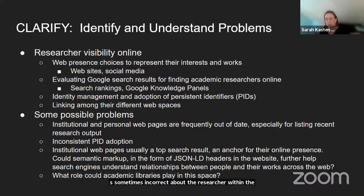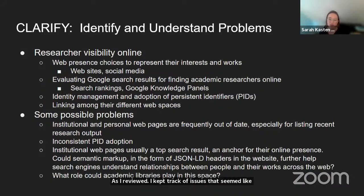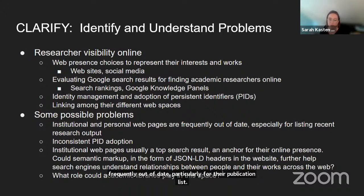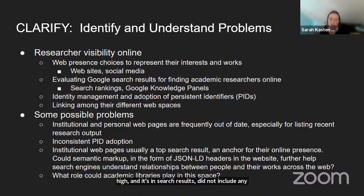Things are slightly more complicated where someone has a particularly common name or shares a name with another person with substantial online representation. There would often be an unclaimed stub Google knowledge panel that provides very basic and sometimes incorrect information about the researcher. Within the websites they control — institutional, personal, or lab webpage — there tends to be some biographical information, description of research interests, and a static list of published works. As I reviewed, I kept track of issues: institutional and personal webpages are frequently out of date, particularly for publication lists, possibly speaking to a barrier for researchers in managing their online spaces. I also saw very inconsistent adoption of persistent identifiers like ORCIDs, and it seemed like a missed opportunity that researcher webpages didn't include any semantic markup to help search engines construct relationships between these people and their works.